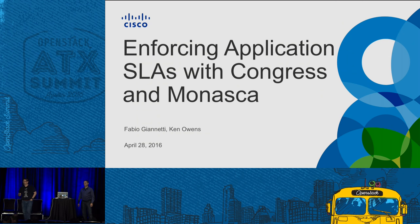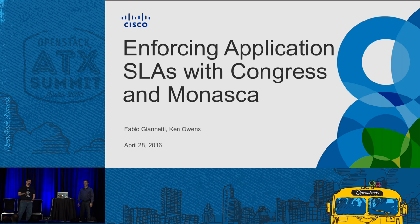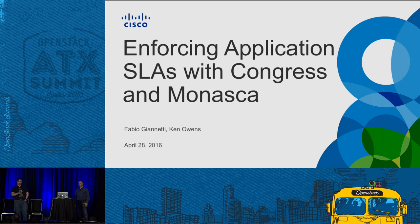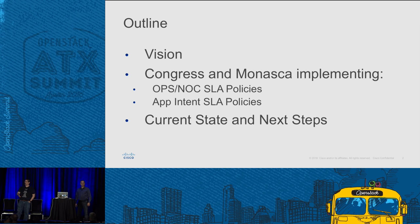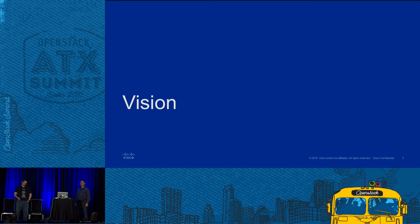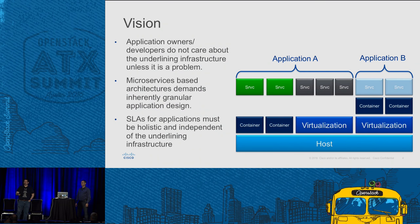Good afternoon everyone — good morning to some of you. Today we're going to talk about how we're going to enforce application service level agreements with Congress and Monasca. I'm Ken Owens, CTO at Cisco's cloud services team. I have Fabio with me — he's my chief architect. I'll talk about the vision and then turn it over to Fabio to go deeper into how we plan to implement this.